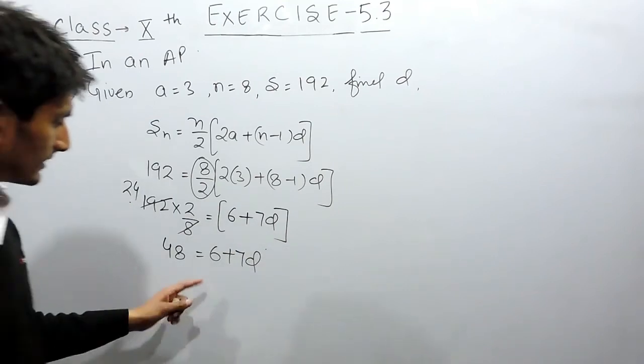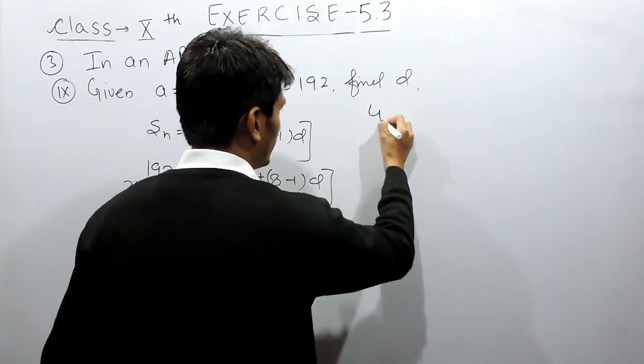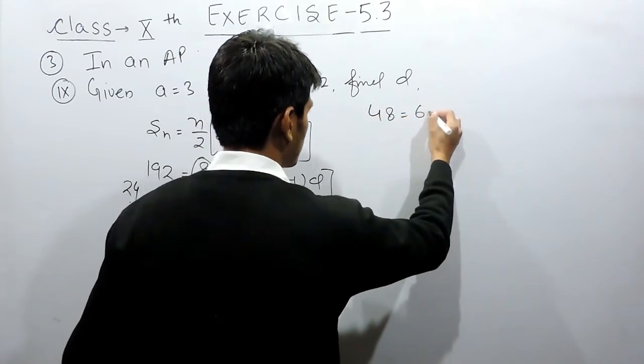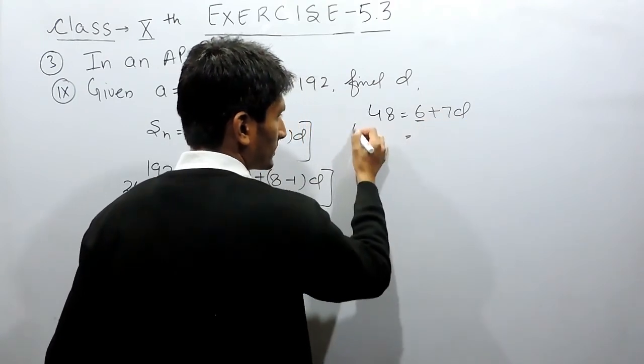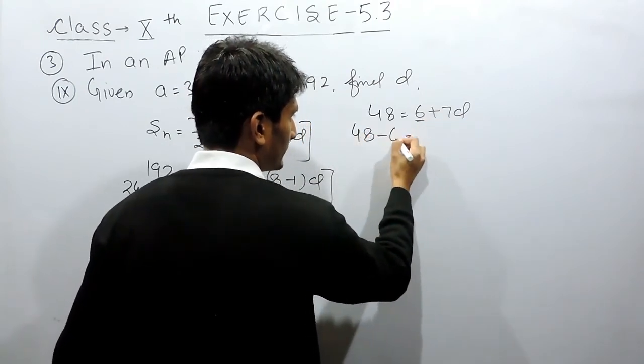This is equal to 6 plus 7D. Now, to solve this, 48 equals to 6 plus 7D. This 6 can be shifted to this side. So this will become minus 6.